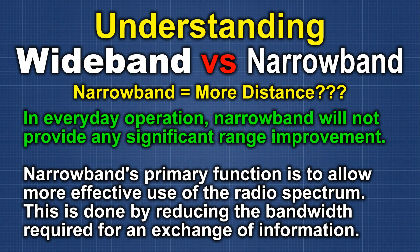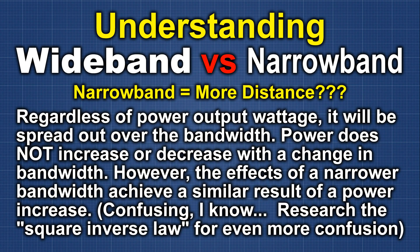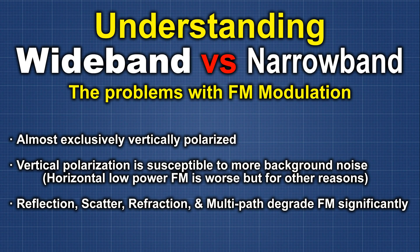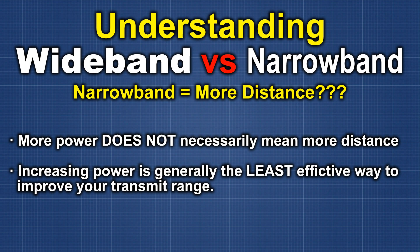That brings us to the argument that narrowband will travel further than wideband. Yes, if you go to narrowband, all of your radio's transmit output power is concentrated into a smaller range of frequencies — it's the equivalent of a small bump up in power. With wideband, your power is spread over a larger area; with narrowband, it's more concentrated. However, honestly it really doesn't matter an appreciable amount, because FM modulation is a lossy form of modulation over distance, and the power differences between wideband and narrowband aren't really that big anyway.